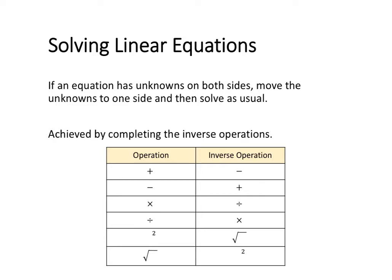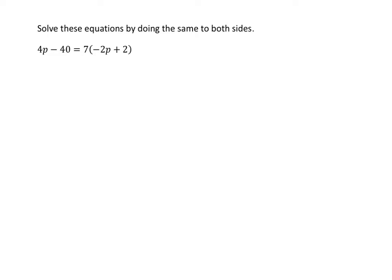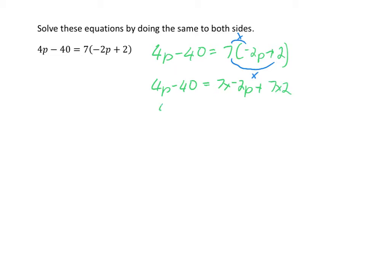Let's have a look at some examples of linear equations with unknown variables on both sides. In our first example, we want to solve the equation 4p minus 40 is equal to 7 times negative 2p plus 2. The first step is to simplify both sides by applying distribution to the right-hand side: 7 times negative 2p and 7 times 2. So 4p minus 40 is equal to negative 14p plus 14.